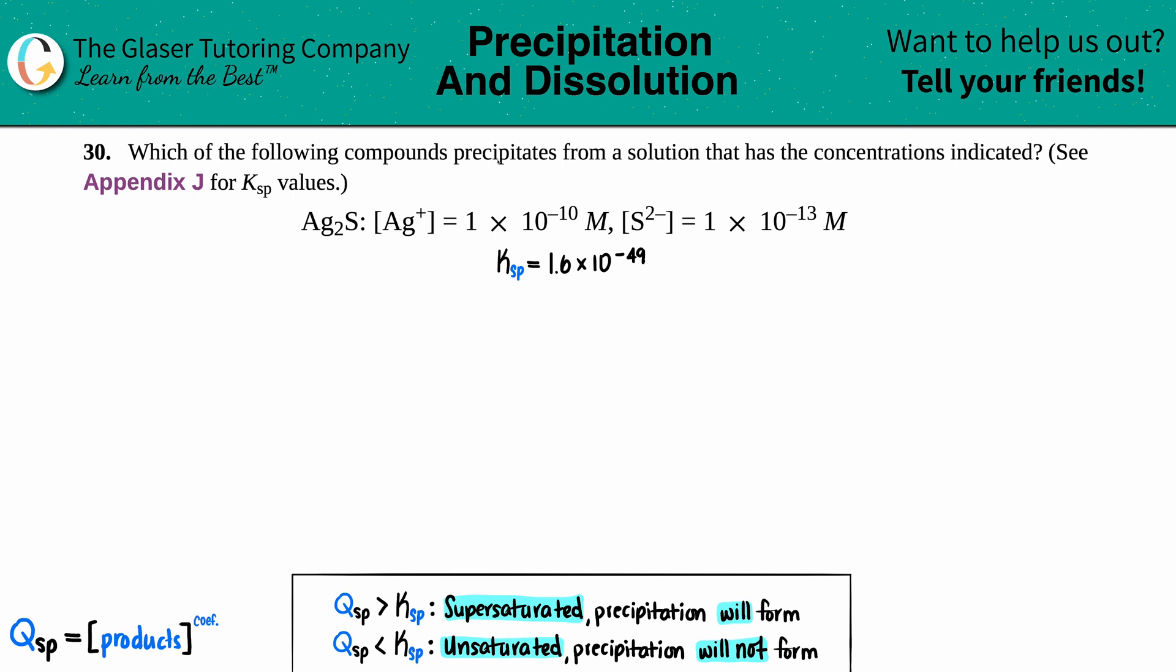Number 30: Which of the following compounds precipitates from a solution that has the concentrations indicated? See Appendix J for Ksp values. We have silver sulfide, Ag2S. They told us that the silver ion concentration is 1 × 10⁻¹⁰ M and the sulfide S²⁻ concentration is 1 × 10⁻¹³ M.